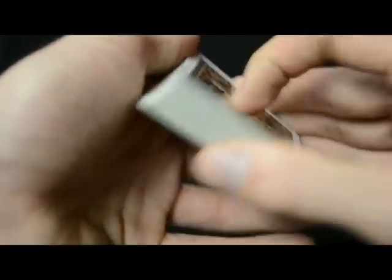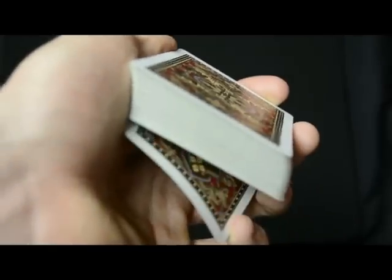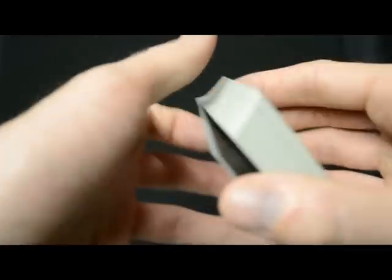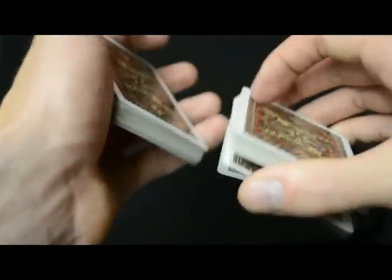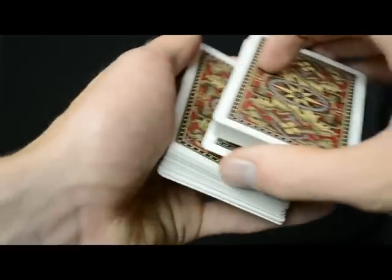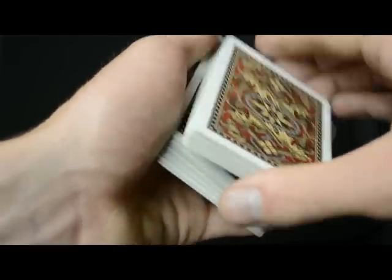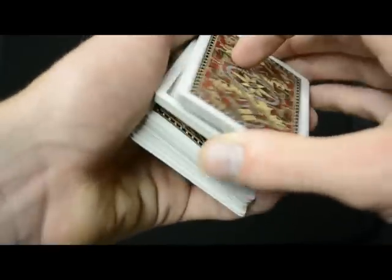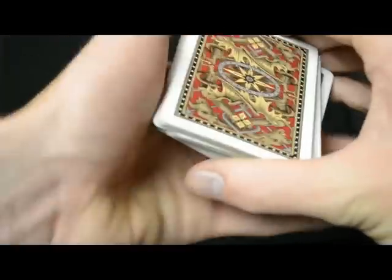Then what you're going to do, you can either thumb down the bottom queen or you can just pull down with your pinky. But you're going to get a thumb break, cut part of the deck, drop that queen on top just like this. And then you can either do a couple more cuts maintaining your break, or whatever you want, just cut this card back to the top. So now we have both queens on top.